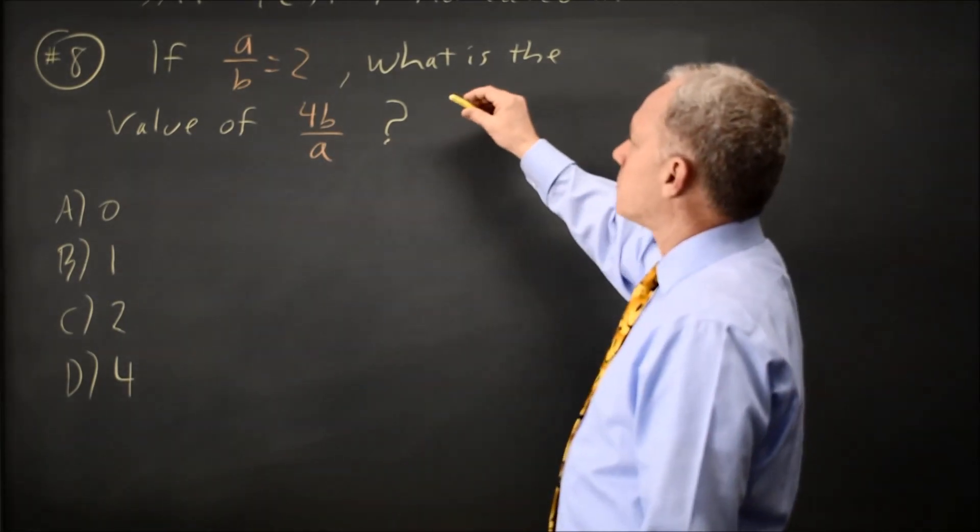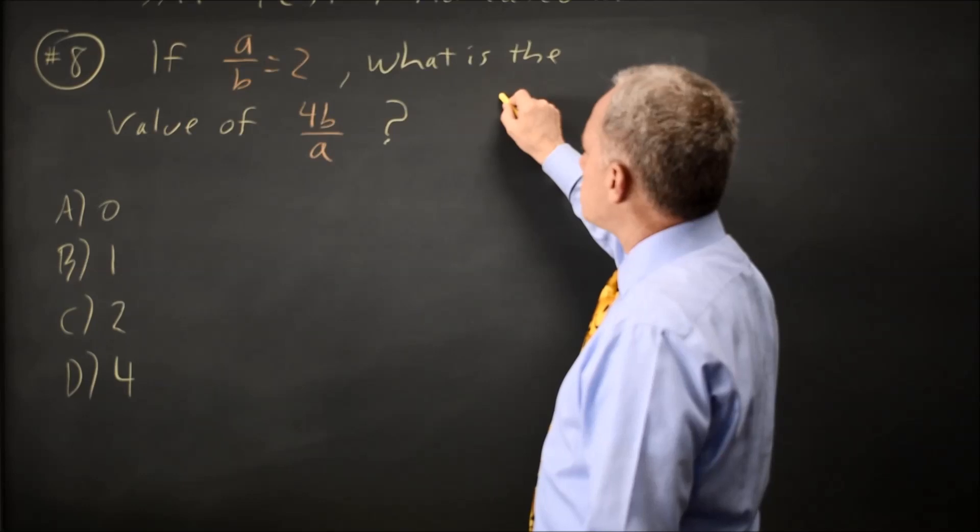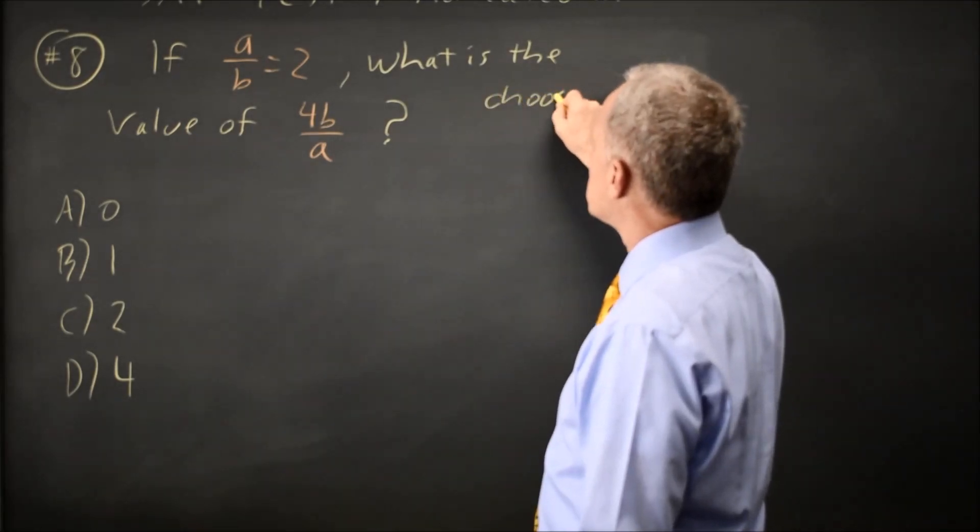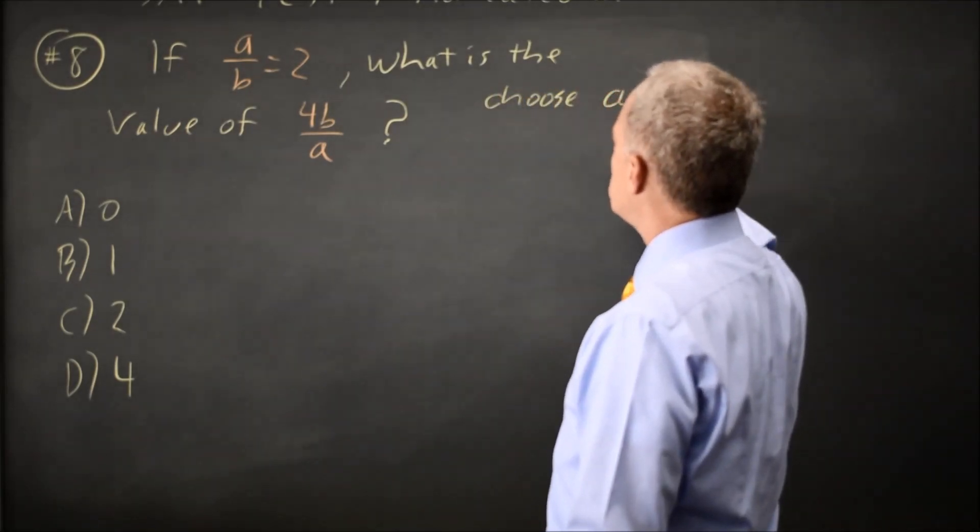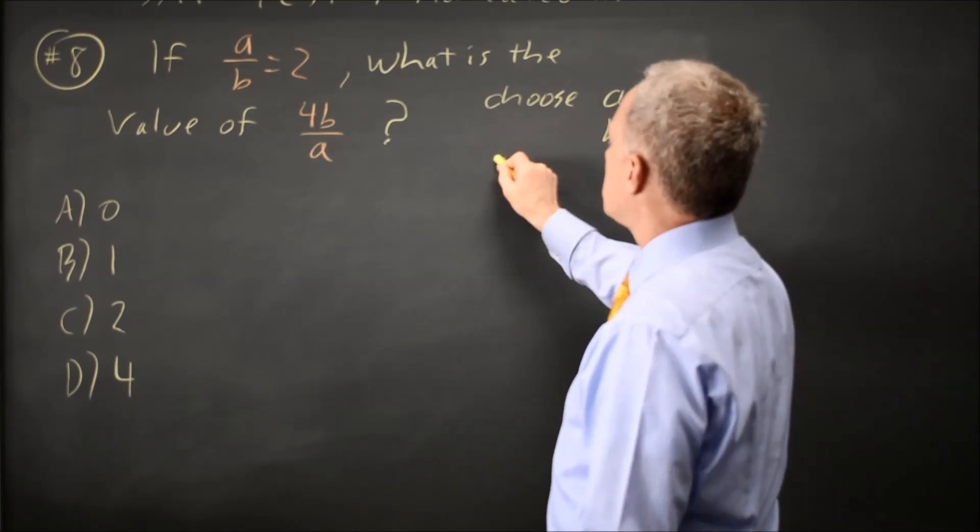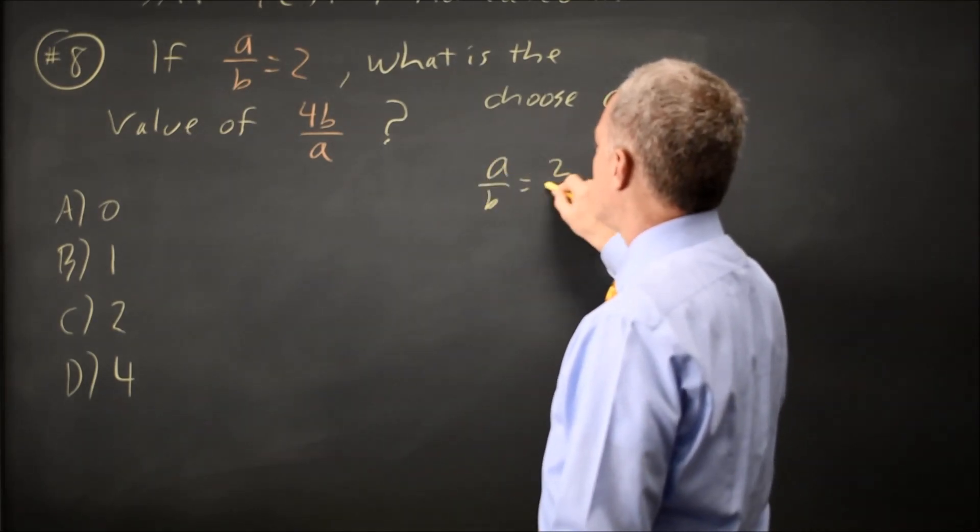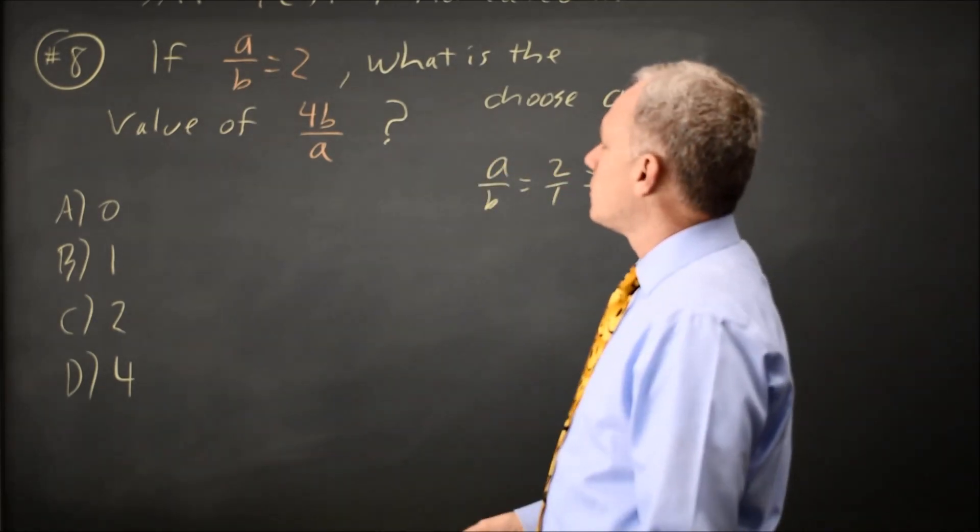The easiest way to do this is to make up numbers for A and B. Let's choose A equals two, B equals one, then A over B equals two over one equals two. So that works.